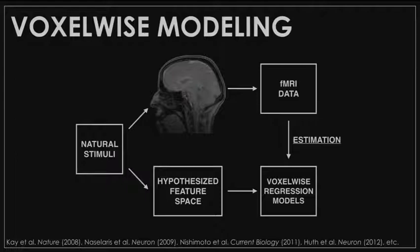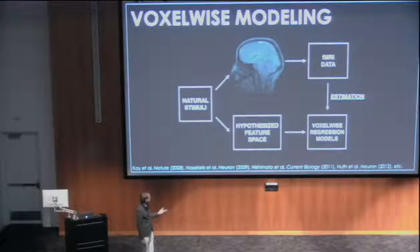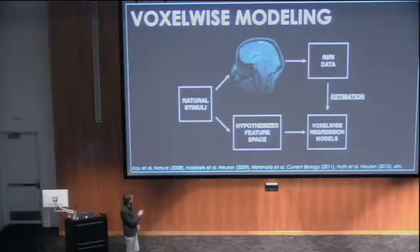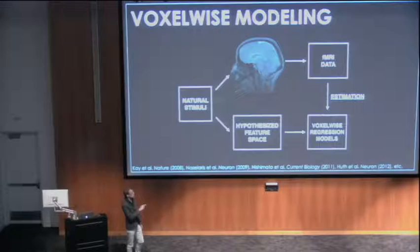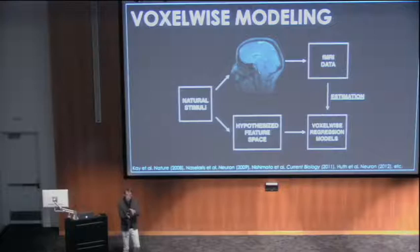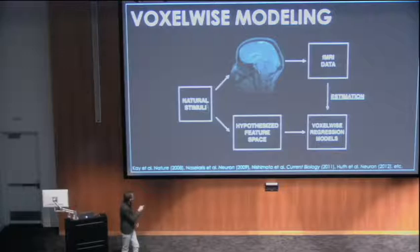We start with some natural stimuli, like the stories I just told you about — we've done many other things in the Gallant lab as well. We show them to the brain and get fMRI data. Then we take these stimuli and use a computational model to extract some hypothesized feature space. This is really where the hypothesis comes in. We didn't collect data to test one specific hypothesis — we collected data using natural stimuli that you can then use to test many different hypotheses, which makes this data much more reusable.